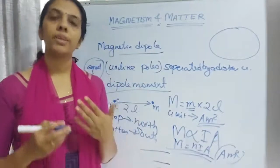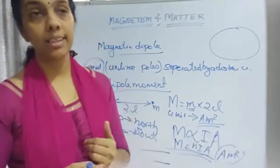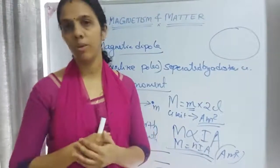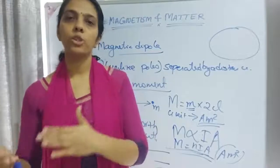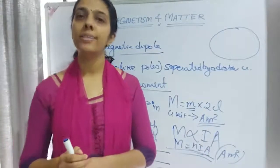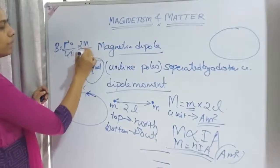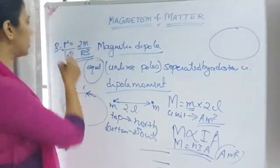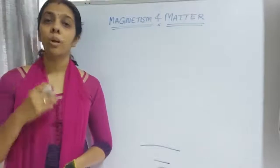A bar magnet can be considered as equivalent to a solenoid. In previous years, derivations for magnetic dipole moment at the axial and equatorial lines were required, but this year we need to prove that a bar magnet is equivalent to a solenoid. From that derivation we get the equation: B = (μ₀/4π) × (2m/r³). You should memorize this formula.